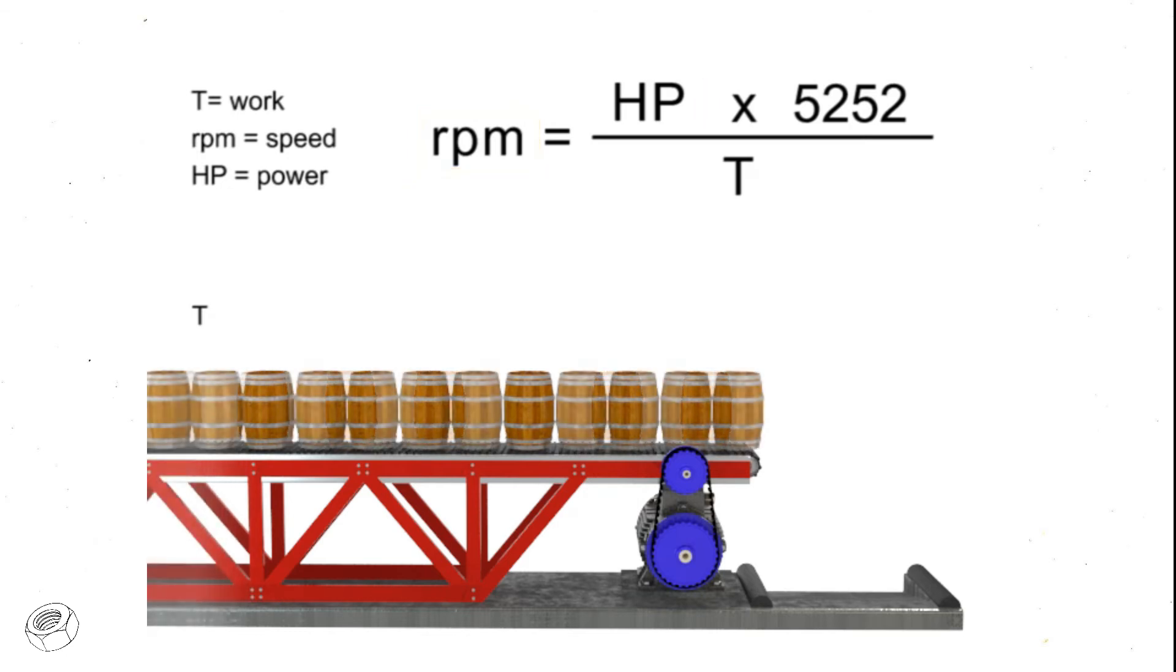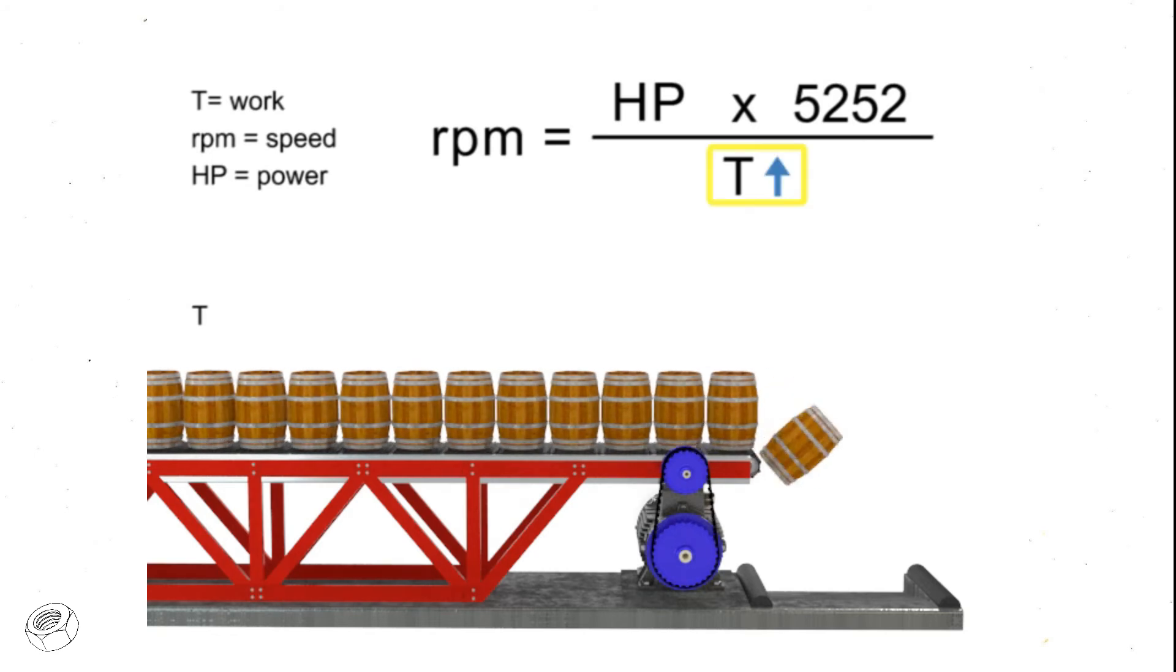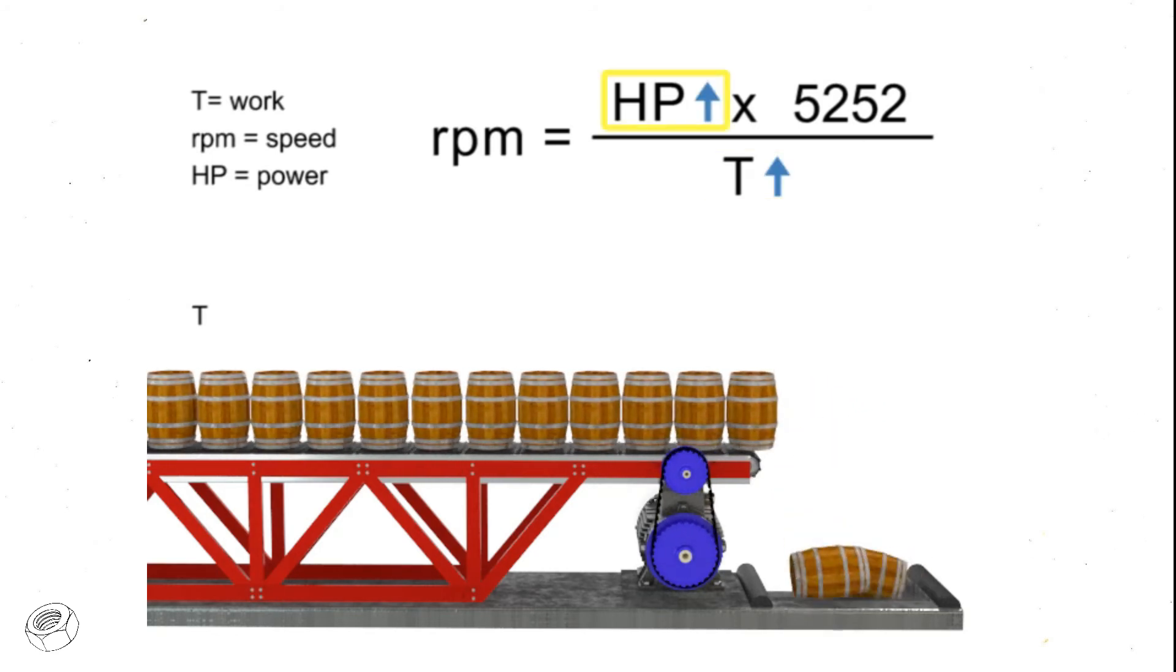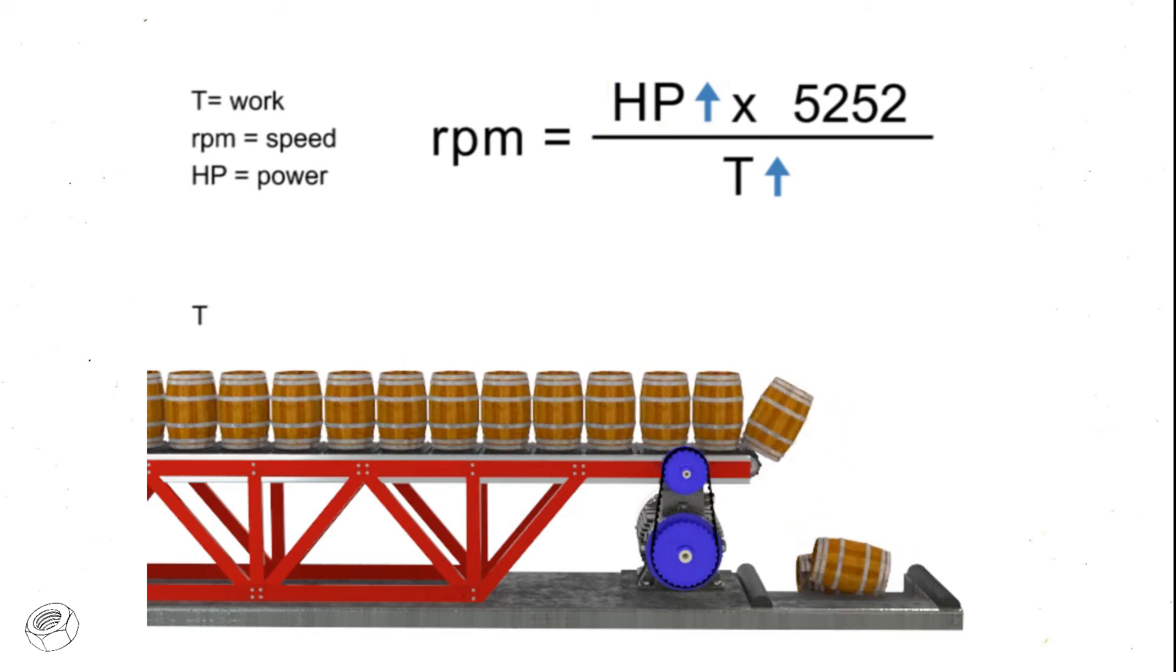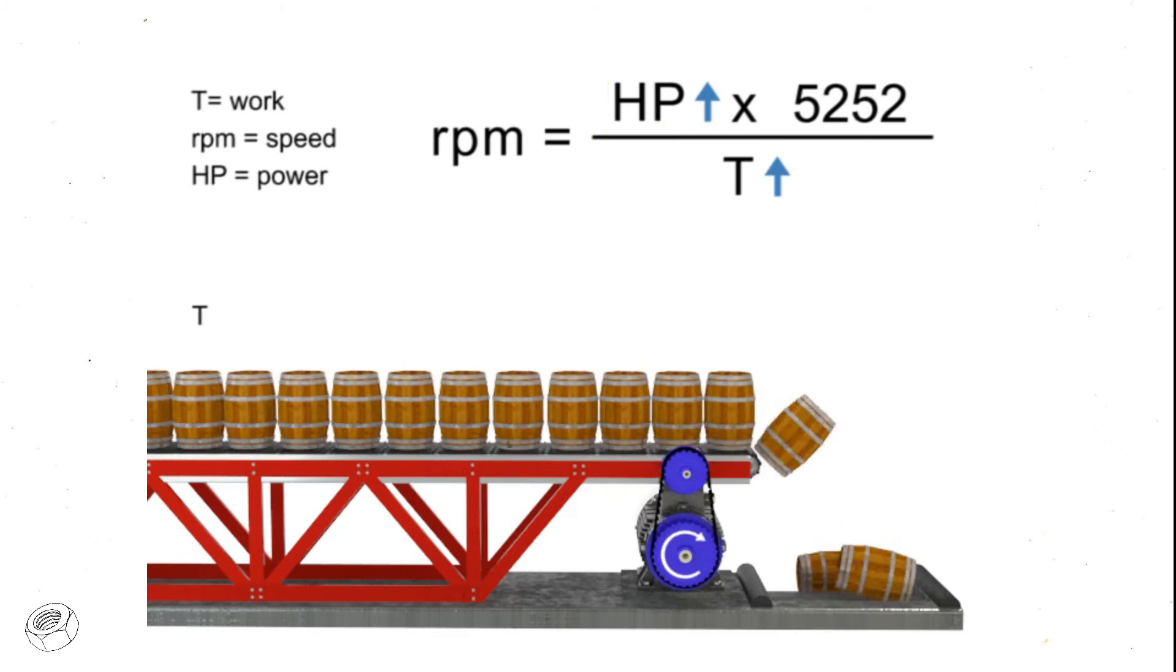Let's say we want production to increase, but the speed of the conveyor to remain constant. If torque increases, horsepower also increases to compensate. This means a more powerful motor is needed to produce more torque at the same speed.